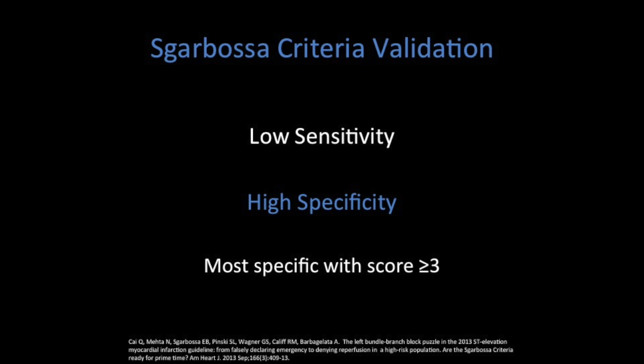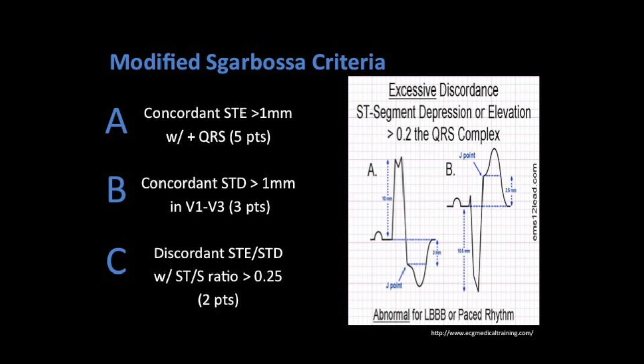The criteria was most specific with categories A and B. Because of this, and based on evidence a little beyond the scope of this talk, something called the modified Sgarbossa criteria was developed. What this changed was category C — it changed to discordant ST elevation or depression with an ST to S ratio greater than 0.25. If you want more information on this or want to understand it better, it's worth taking some time to really go through the study and the diagram on the slide.